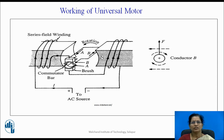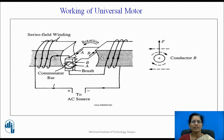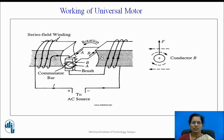If we connect AC supply to that motor, the direction of the current through the series field winding and the armature winding both are reversed for the positive cycle and negative cycle. So the torque created on the current carrying conductor has the same direction. Therefore, a unidirectional torque is created due to both the positive cycle and negative cycle. Thus, unidirectional torque is created due to AC supply.